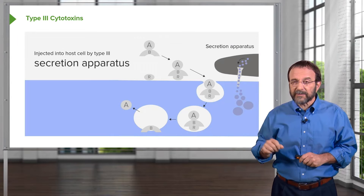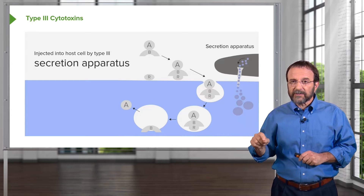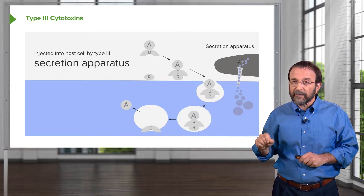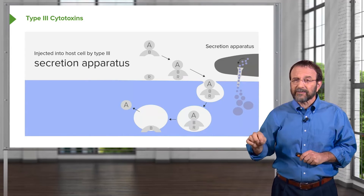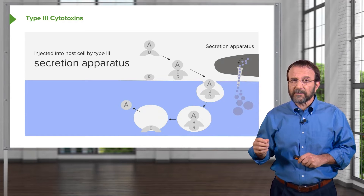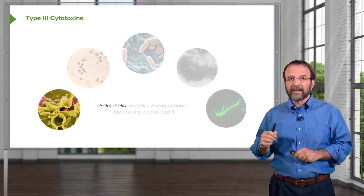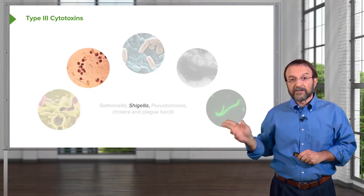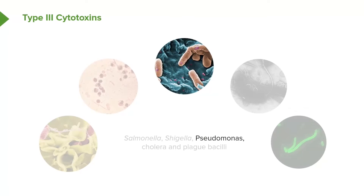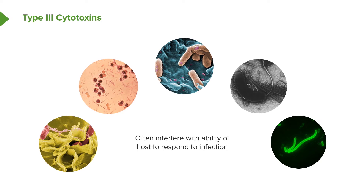The type 3 cytotoxins, shown on the right-hand part of this screen, are injected by the bacterium into the host cell by a type 3 secretion apparatus. Bacteria have a number of different kinds of secretion apparati used to inject effector molecules into the host cell to alter its biochemistry and cause pathology. Type 3 cytotoxins are found in a wide range of bacteria — for example, Salmonella, Shigella, Pseudomonas, Cholera, and the Plague Bacilli all produce type 3 toxins of various sorts.